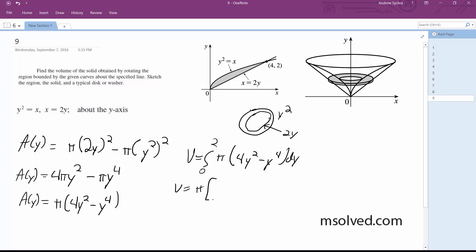is equal to π times (4/3)y³ minus y⁵/5, evaluated from zero to two. Pi times (4/3)(2³) minus 2⁵/5. And finally, volume is going to be